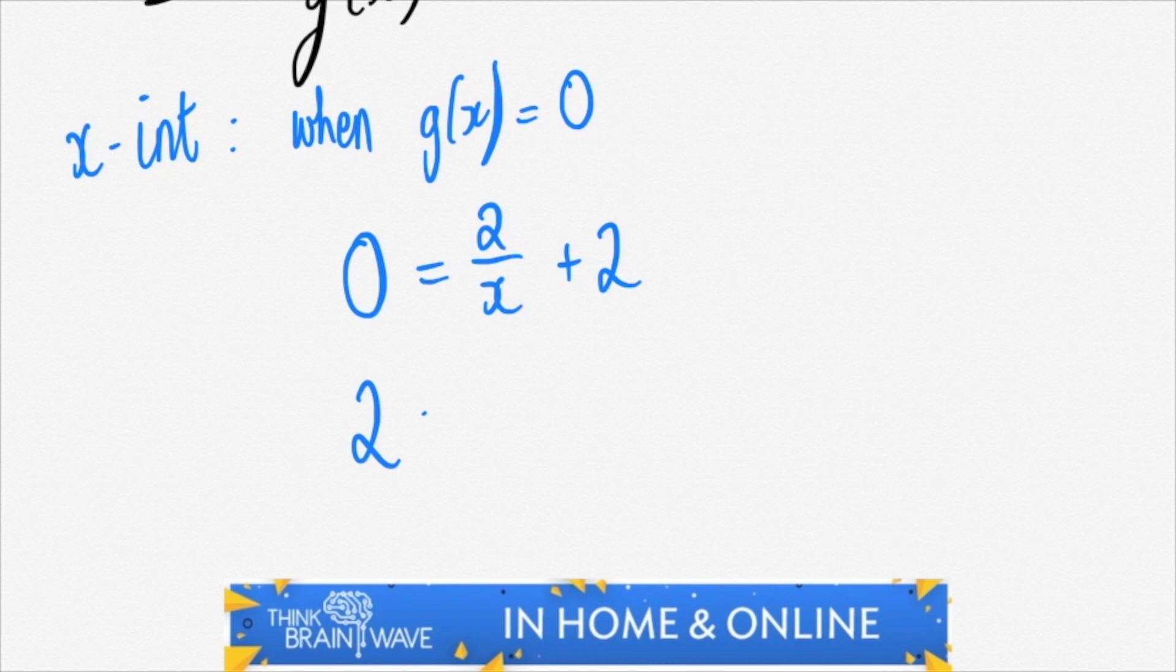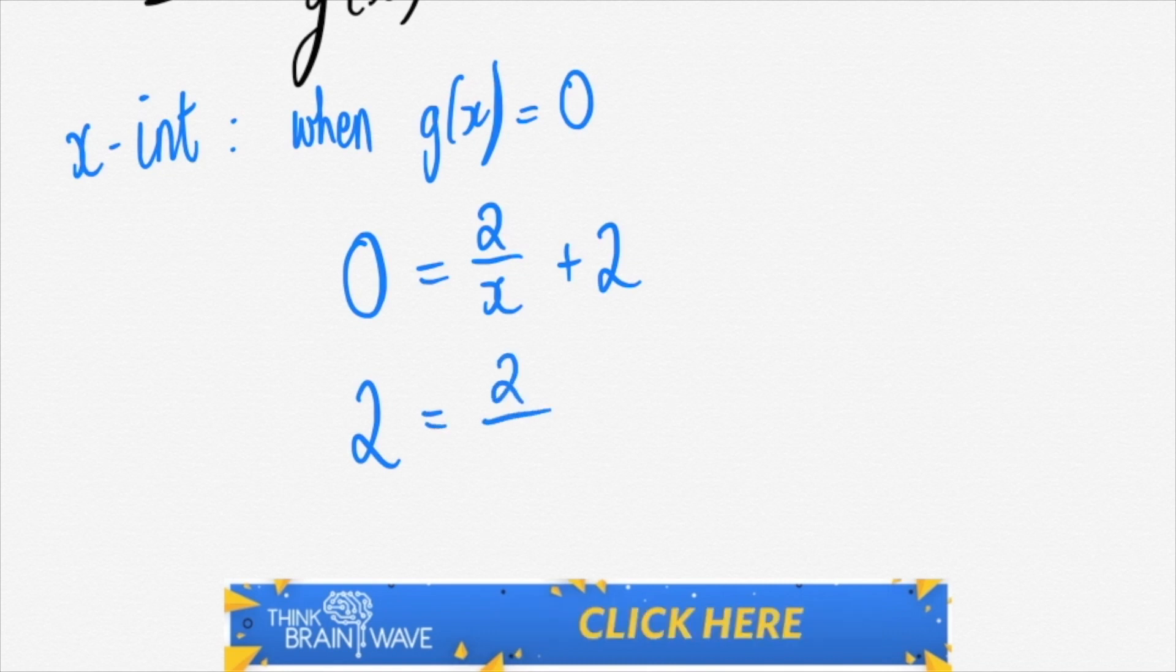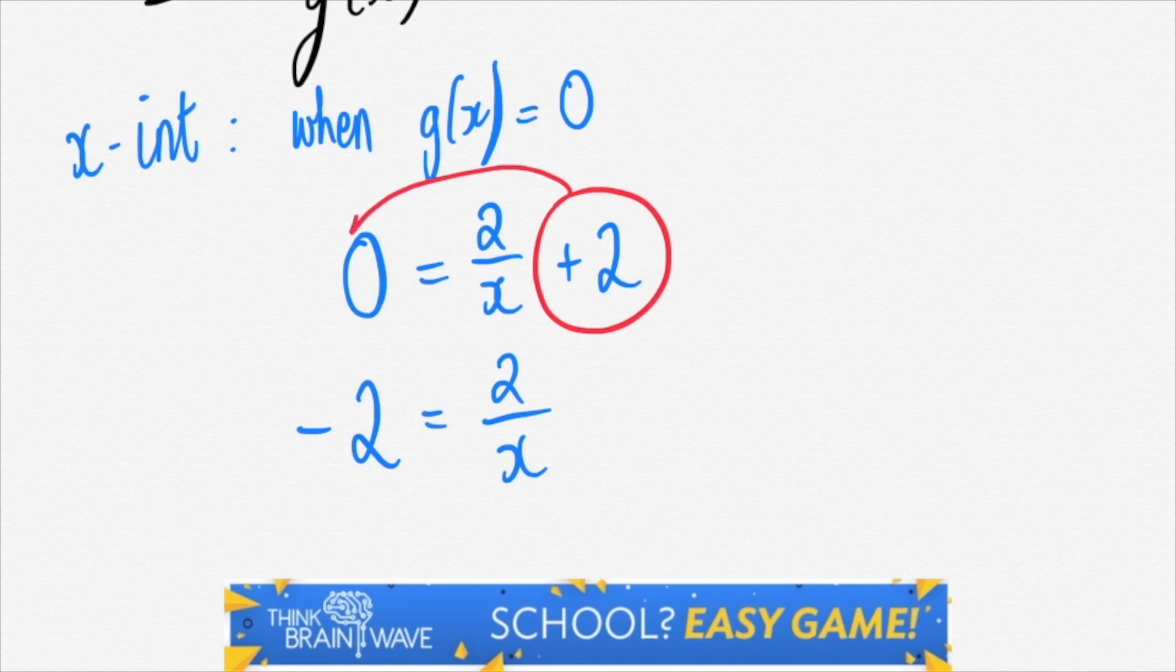We manipulate the equation. We change our signs. As we move the 2 across to the left, we have to change from a positive sign to a negative sign.